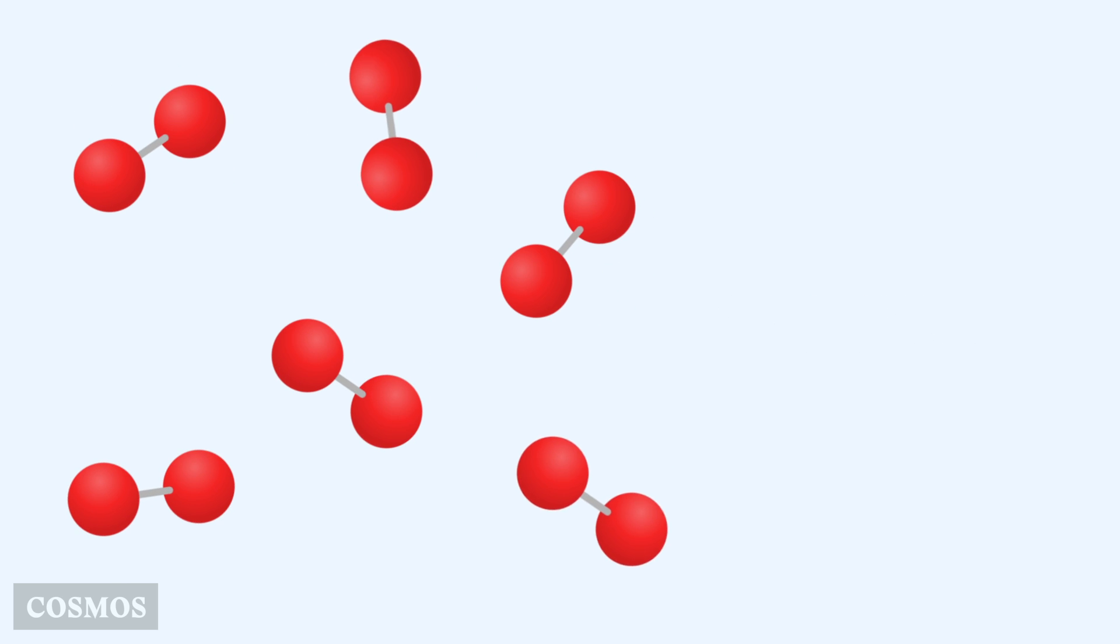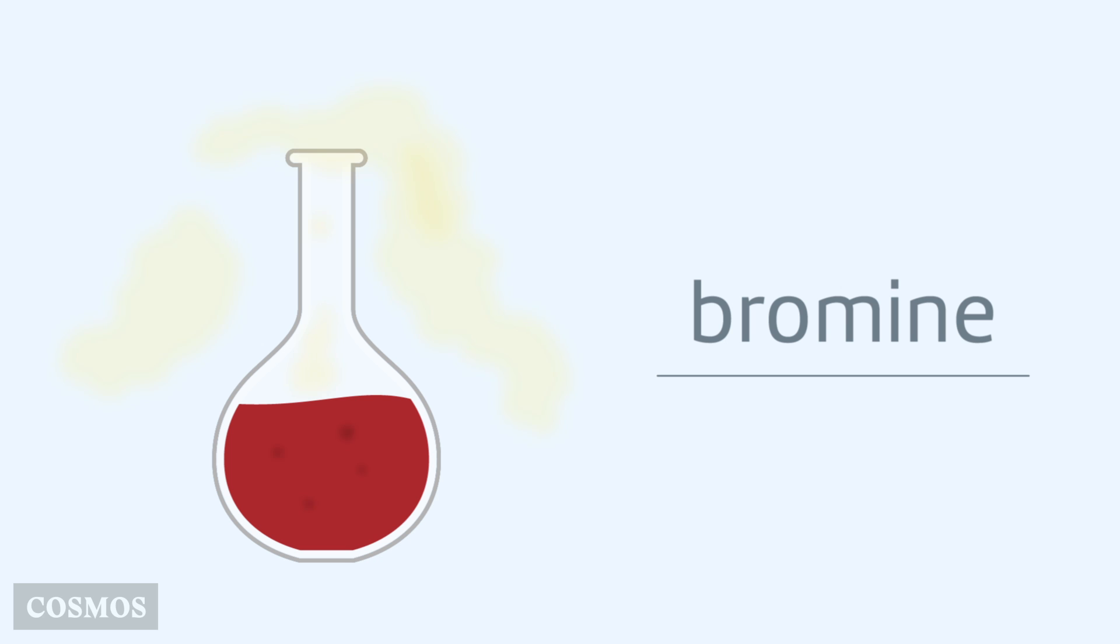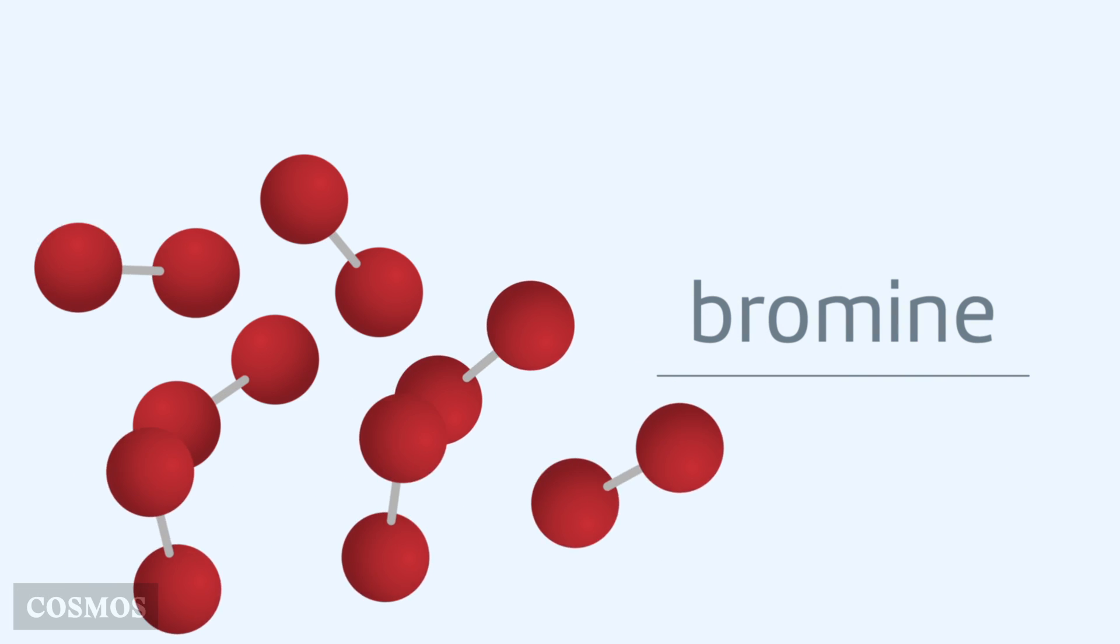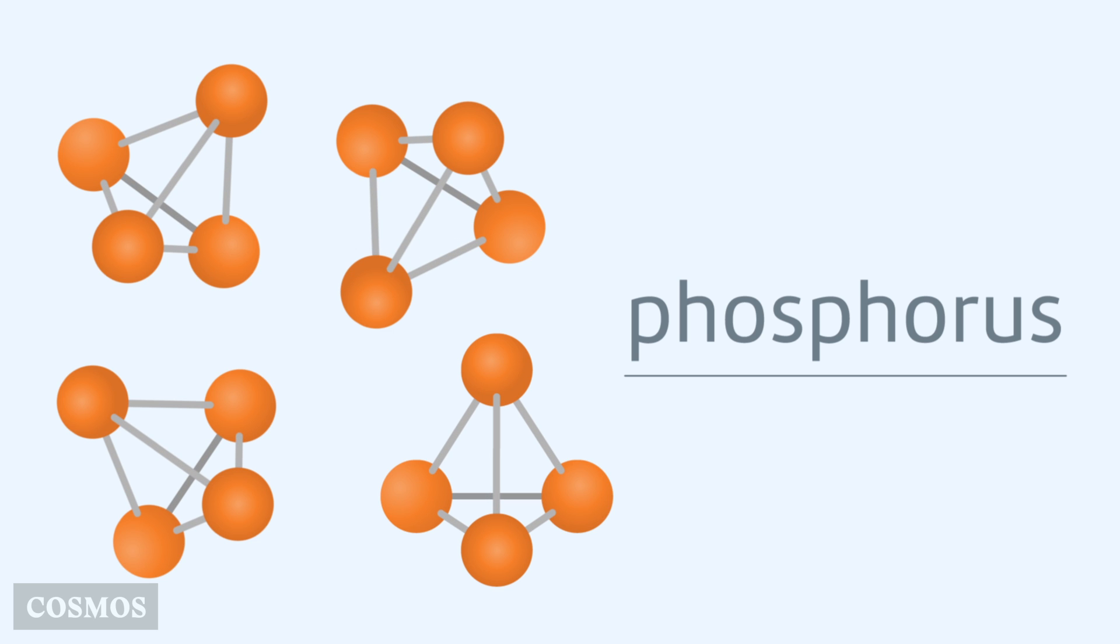Small groups of atoms bonded together are called molecules. The element bromine is a red oily liquid that's also made up of molecules with two atoms. Phosphorus is a white solid made up of bigger molecules, with four atoms each.